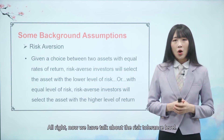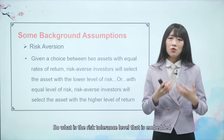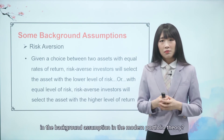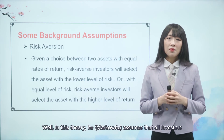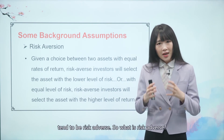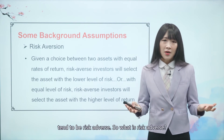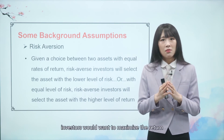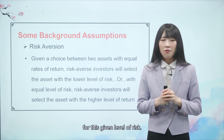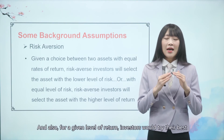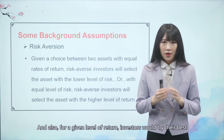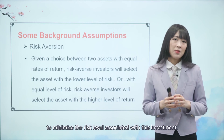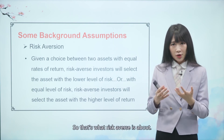We have talked about risk tolerance level. What is the risk tolerance level embedded in the background assumptions of the Modern Portfolio Theory? This theory assumes that all investors tend to be risk averse. Risk aversion means that for a given level of risk, investors want to maximize their return, and for a given level of return, investors try their best to minimize the associated risk level.